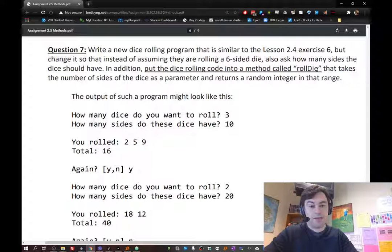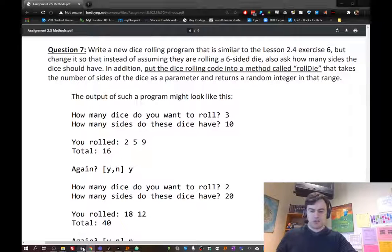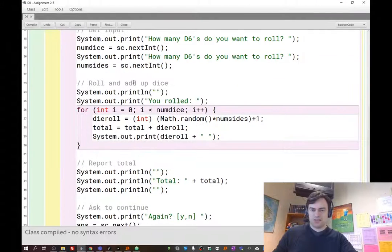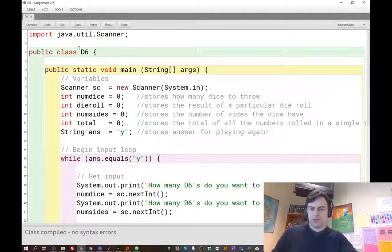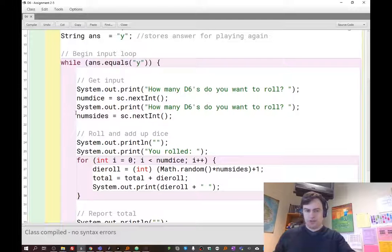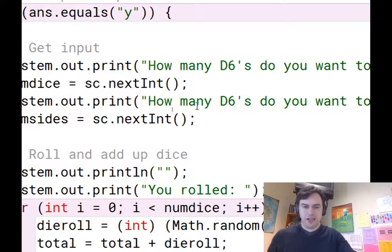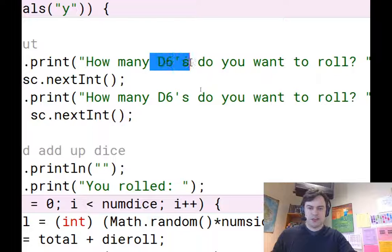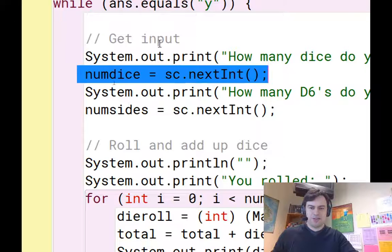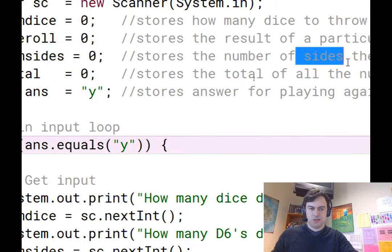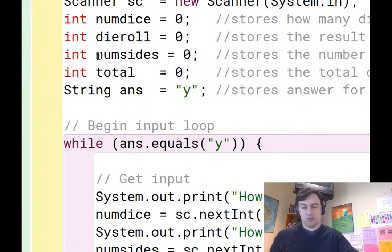I'll go over to my assignment 2-5, and inside of d6 I've copied and pasted the code from the old d6. I've gone ahead and made this change already. To make sure I'm also checking how many sides, I'm going to change these. Instead of saying how many d6s do you want to roll, I'll change this to how many dice do you want to roll. I'm reading that in as numdice, and then I have an additional variable called numsides.